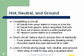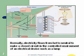Lines in three-prong plugs: hot, neutral, and ground. We can verify voltages at outlets using a receptacle tester. Normally, electricity flows from hot to neutral, making a closed circuit in the controlled environment of an electrical device such as a lamp — inside the lamp, we have a light bulb with a hot wire and neutral, and voltage flows across the element, giving you light.